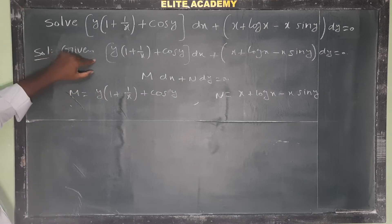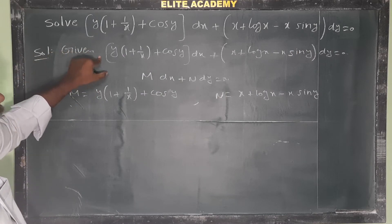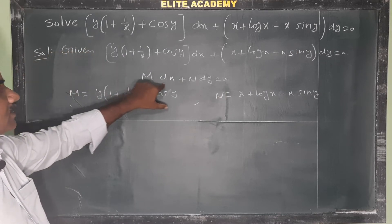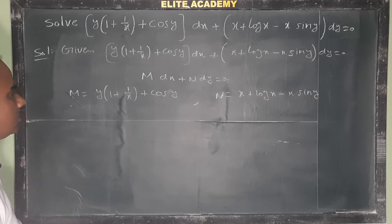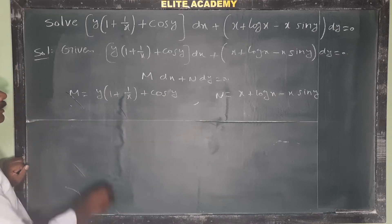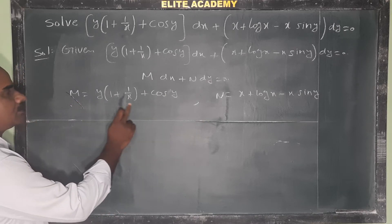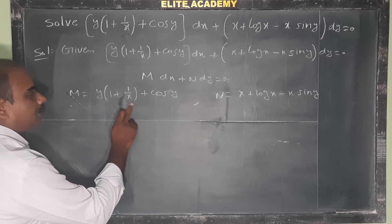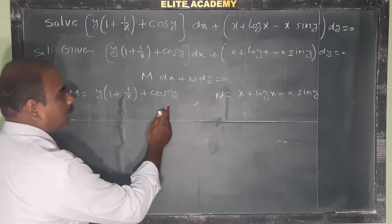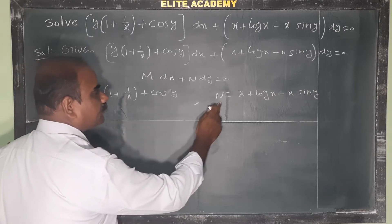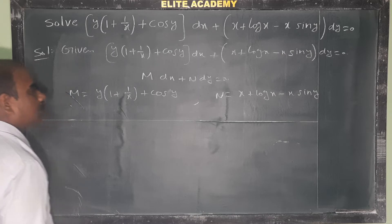First, write the given differential equation in the form M dx + N dy = 0. Comparing, M = y(1 + 1/x) + cos y, and N = x + log x - x·sin y.